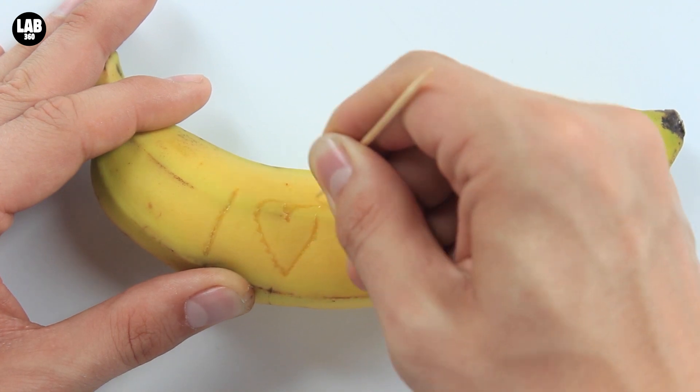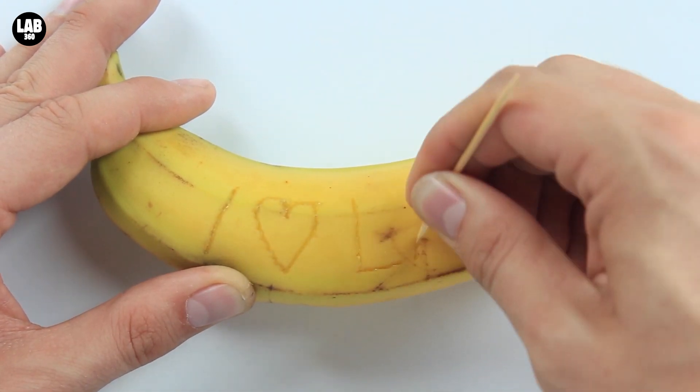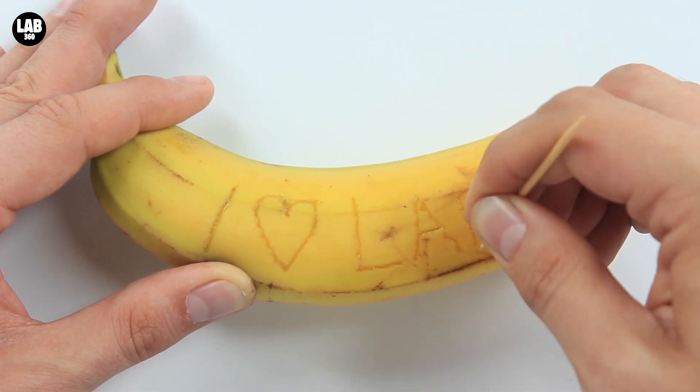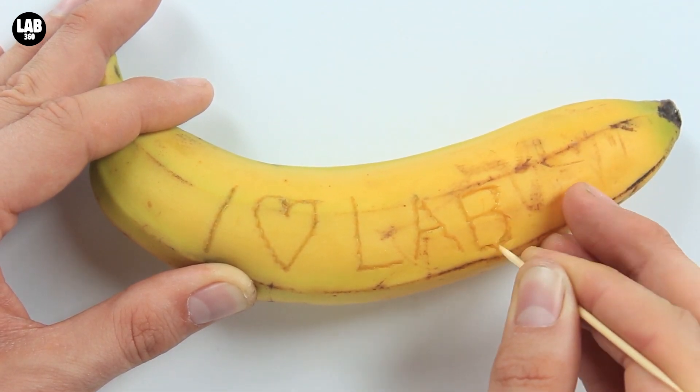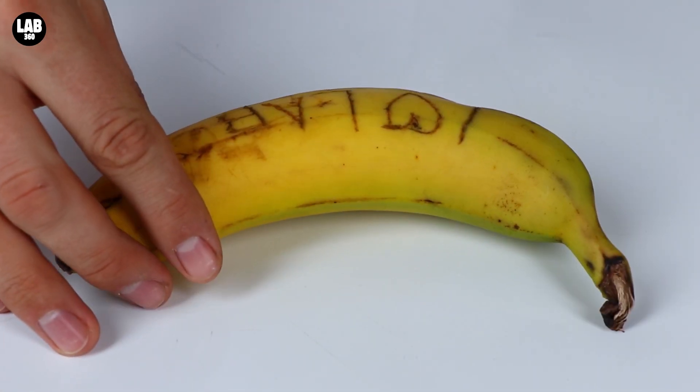Number four. Banana writing. Use your toothpick to write a message in the side of a banana and within five minutes you'll have a nice clear message like this.